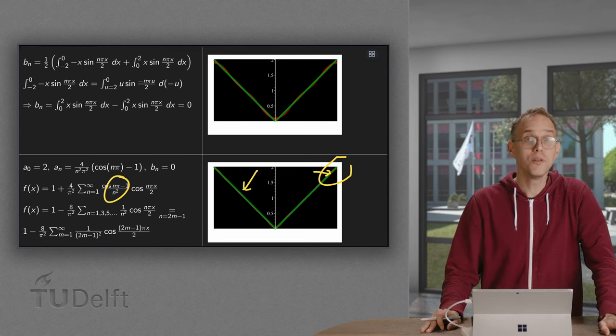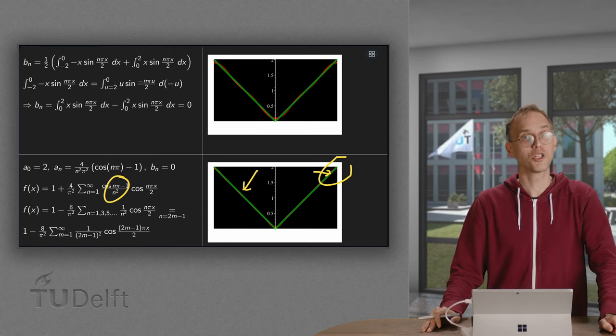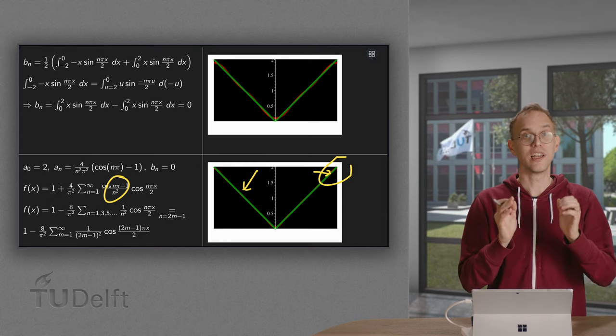We now see how to compute its coefficients, and we see in this example we only need a very small amount of terms to represent our original function really well.